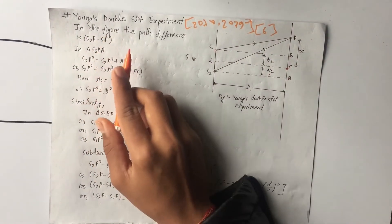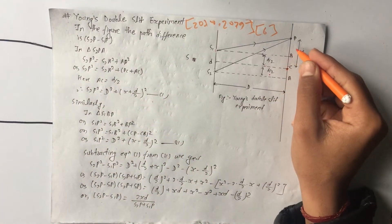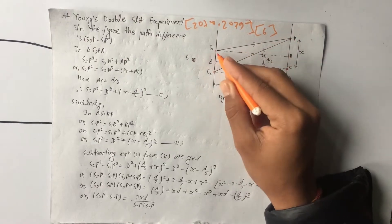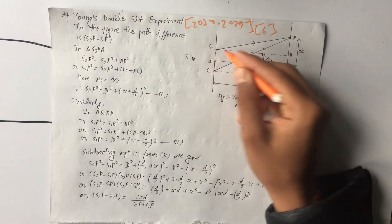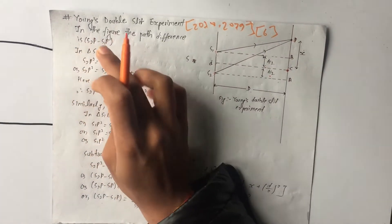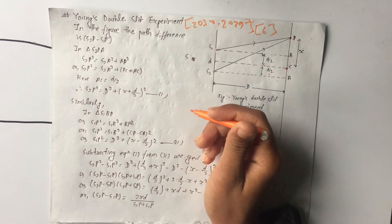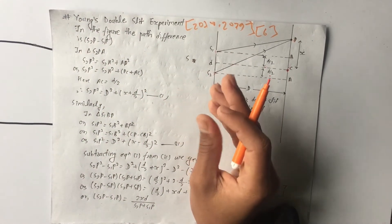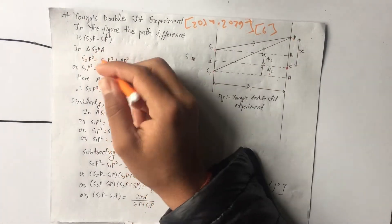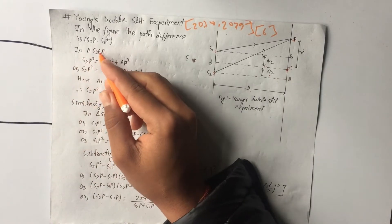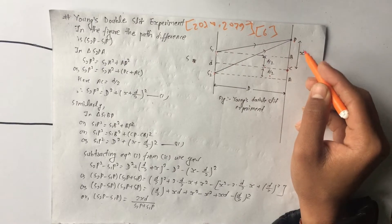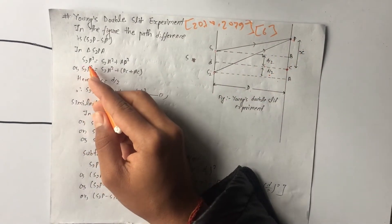From the figure, the path difference is equal to S2P minus S1P. We need to find the values of S2P and S1P from the expression in the triangle S2PA.